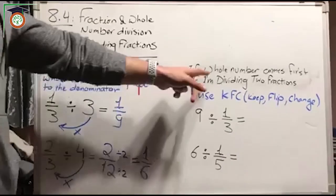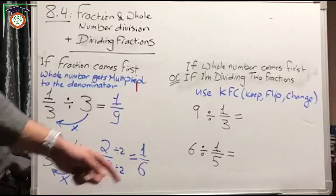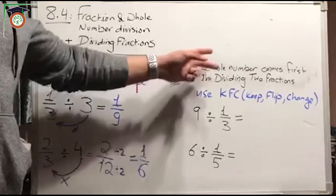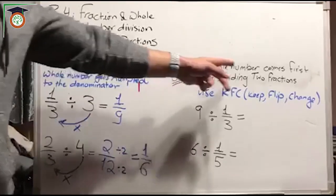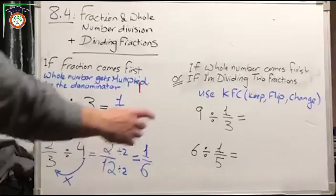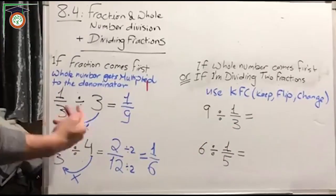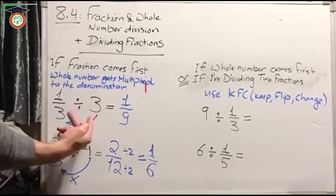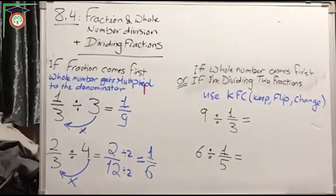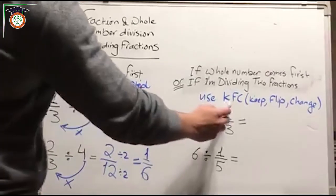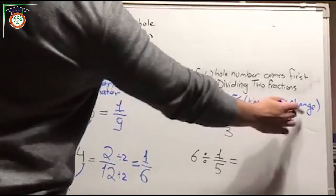Now in this case, if the whole number comes first or if I'm dividing two fractions, I use a technique called Kentucky Fried Chicken, or KFC — it means Keep, Flip, Change. This technique works for both cases: whole number first, or dividing two fractions.